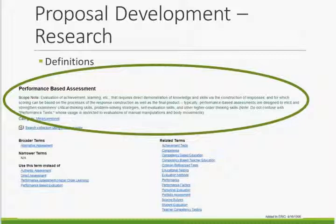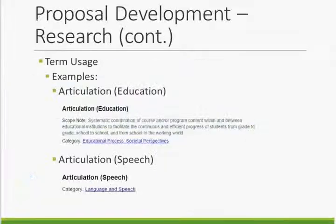An example in the Thesaurus is the term performance-based assessment, which includes a note to distinguish it from performance tests. Term usage in ERIC is also examined to identify any differences in how a term is defined or used within the ERIC literature. This helps determine if more than one term is required to address multiple uses. An example is the concept of articulation, which has two different definitions in ERIC. Two terms were required — each with its definition provided in parentheses — and their categories and scope notes further distinguish them. Examining term usage also helps determine if a term is not used consistently, indicating that more time may be needed for the concept to solidify before it can be added.